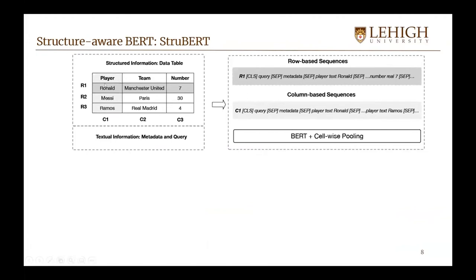For the row-based sequences, we use the first row as an example. We concatenate the textual information with the representation of every row using the separator special token from BERT. The same applies for the column-based sequences: we fuse the textual information with the representation of the column by concatenating them using the separator token. After that, we encode the sequences using BERT and then apply cell-wise pooling to obtain a singular representation for each cell in the table.